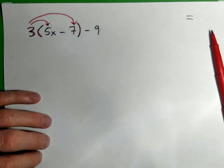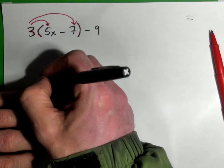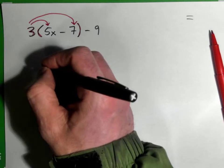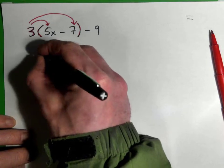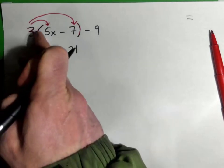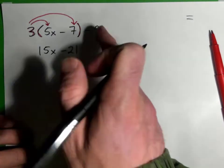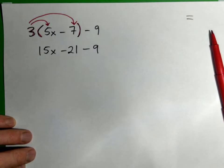So what would we get if we did that? Right, so we get 15x minus 21. Good. If we multiply, 3 times 5x gives 15x minus 21, and you can then just bring down the negative 9. Now we need to combine like terms.